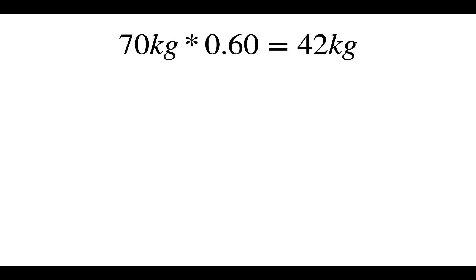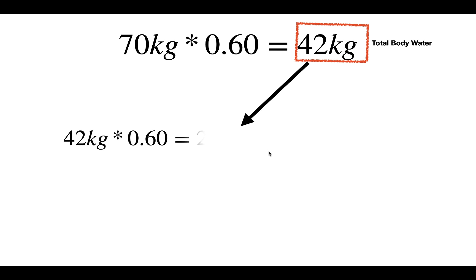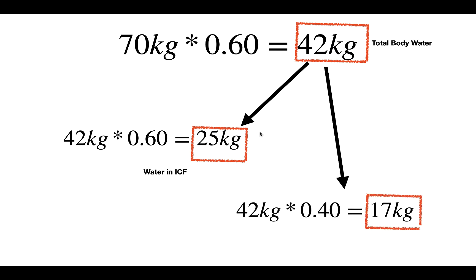Let's go through the answer now. For the prototypical 70-kilogram male, around 60% of that weight is water weight, so the total body water content is 42 kilograms. That 42 kilograms is divided between intracellular and extracellular fluid. Around 60% of total body water is intracellular, so 42 × 0.6 = 25 kilograms intracellular. The remaining water is in the extracellular fluid: 17 kilograms.